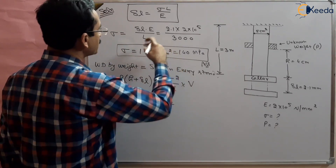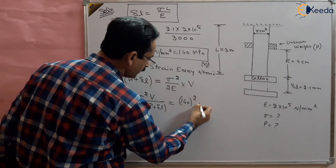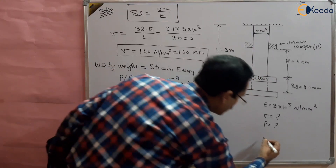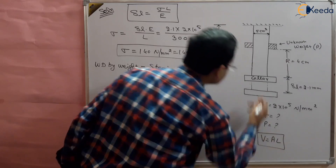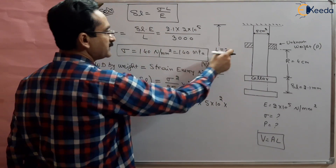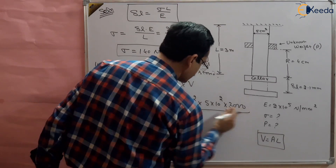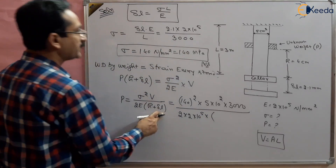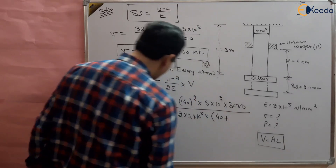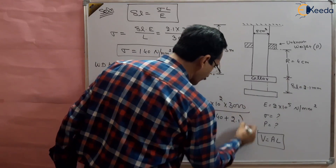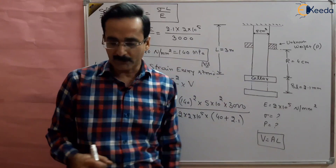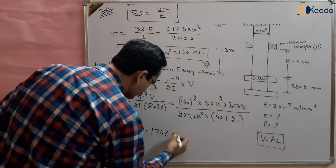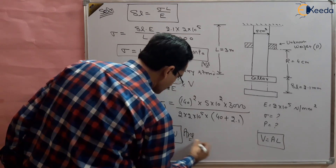Therefore, the unknown weight W equals σ²V / (2E × (h + δl)). Substituting: σ = 140 N/mm², volume = area × length = 5 cm² (which is 500 mm²) × 3000 mm, E = 2 × 10⁵, h = 4 cm = 40 mm, and δl = 2.1 mm. Solving this gives the weight as 1746 Newtons.